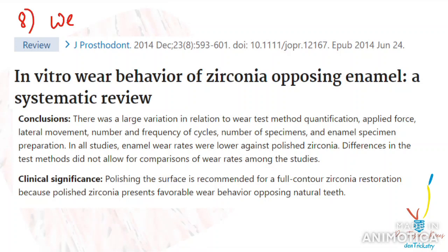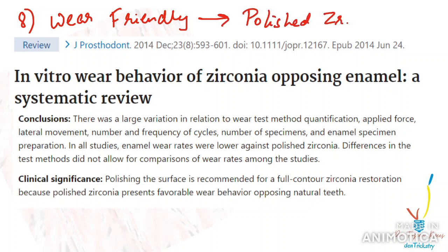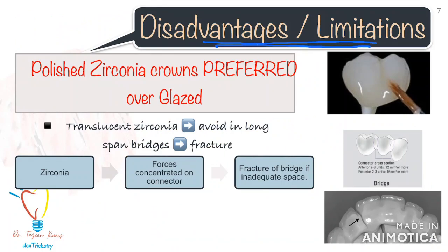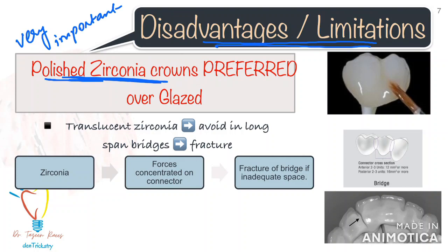During the early 2000s, zirconia was perceived to be a material that would cause high wear to the opposing dentition. But today, multiple studies have shown how zirconia can be gentle to the opposing dentition. The key is to make sure that you have a polished zirconia. If it is not polished, it can abrade the natural teeth. Glazed zirconia significantly increases the wear of the opposing enamel compared with polished zirconia. So it is necessary that the articulating surface opposing enamel should be polished zirconia.